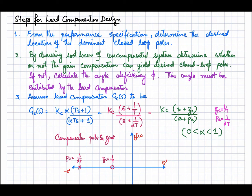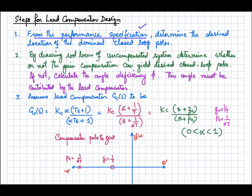The first step for the design of the lead compensator is to determine the desired location of the dominant closed-loop poles from the performance specifications. Once you determine the position of the dominant closed-loop poles, draw the root locus of the uncompensated system and determine whether the desired poles are on the root locus or not. If they are on the root locus, a gain adjustment K can achieve the desired closed-loop position, but if they are not, you will have to compensate the angle deficiency with the lead compensator.